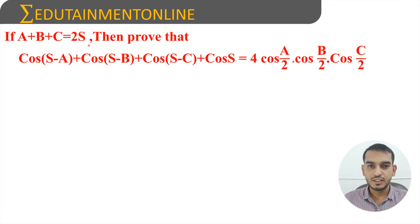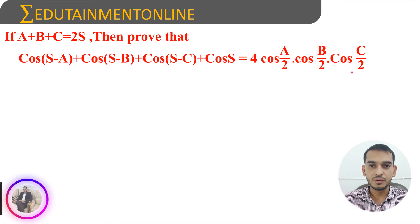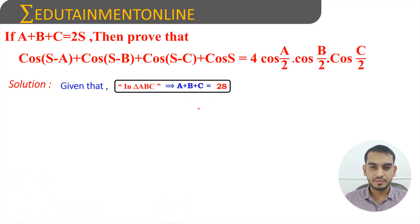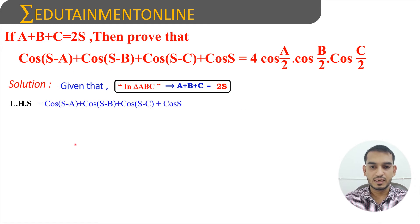If a + b + c = 2s, then prove that cos(s - a) + cos(s - b) + cos(s - c) + cos(s) = 4·cos(a/2)·cos(b/2)·cos(c/2). It is given that a + b + c = 2s, the sum of angles in a triangle. Let us take the LHS: cos(s - a) + cos(s - b) + cos(s - c) + cos(s).